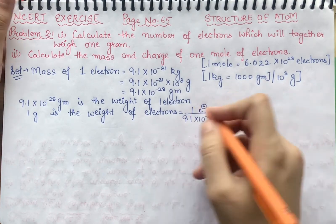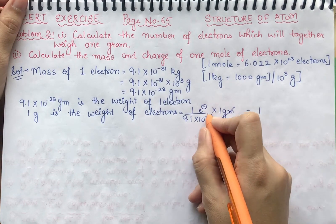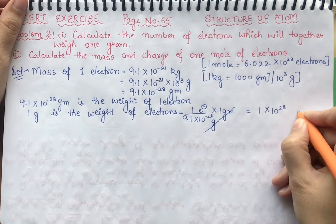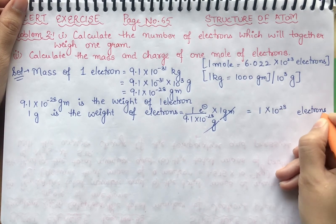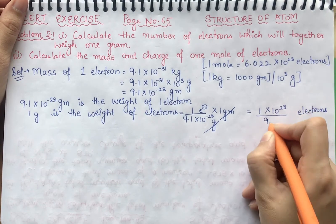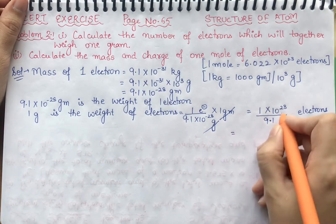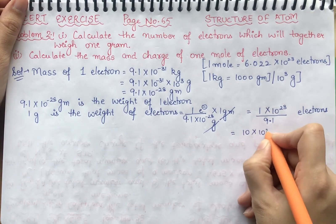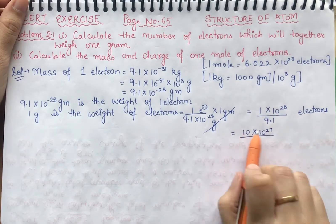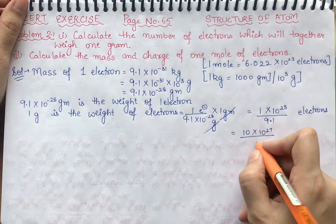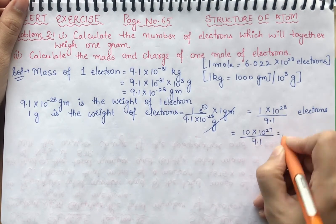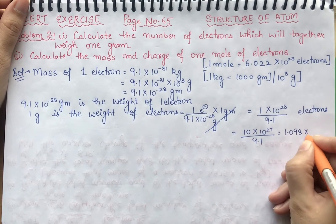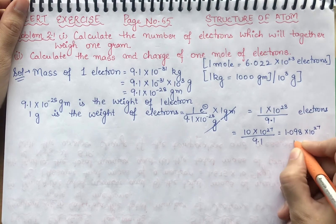Now I will solve this value. We have 1 divided by 9.1 into 10 raised to power minus 28. I can rewrite this as 10 raised to power 28 divided by 9.1, which gives us 1.098 into 10 raised to power minus 27 electrons.